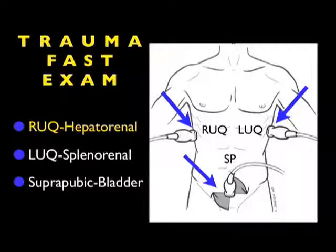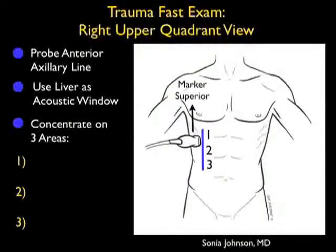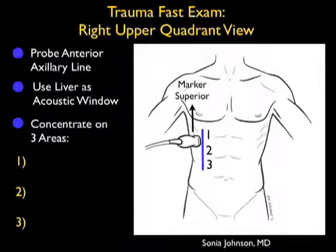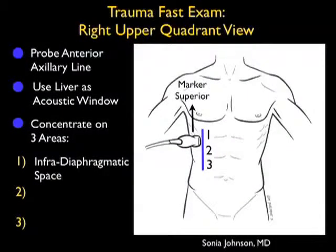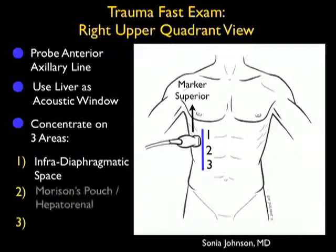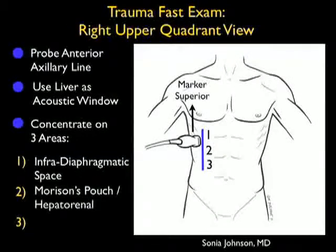Let's begin this module by going through a review of how to perform the Right Upper Quadrant View of the Trauma Fast Exam. Remember that the probe is positioned in the long axis configuration with the marker dot superiorly, and we're going to place the probe in between the ribs at about the anterior axillary line. Here we want to focus on the three areas as emphasized in Part 1: Number 1, the infradiaphragmatic space, looking at that region just below the diaphragm and above the liver, and actually looking into the chest cavity for a hemothorax.